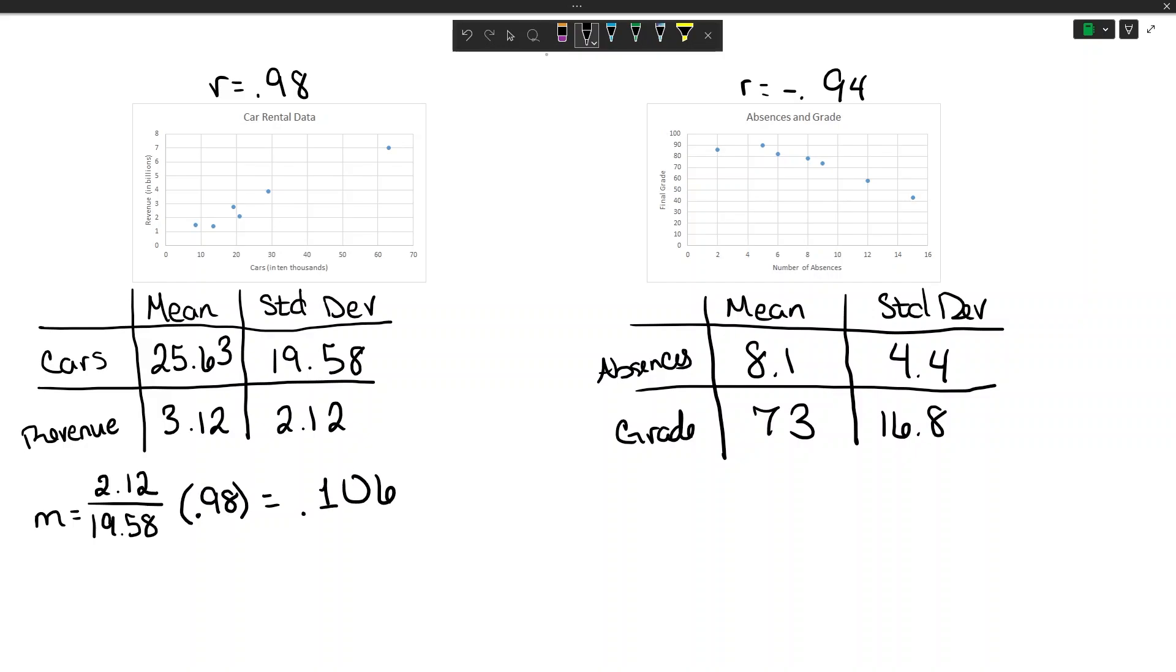For b, we do the mean of the y's, that's 3.12, minus the slope that we just found times the mean of the x's which is 25.63. When we do this we get about 0.303.